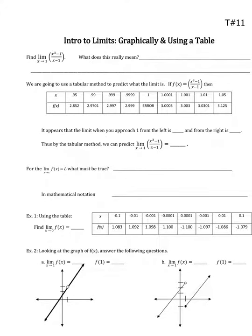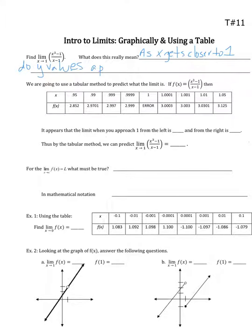Alright, here goes topic 11: intro to limits, doing it graphically and using a table. We have to first figure out what it really means when they're asking you to find a limit. In this particular expression, what you're asked is to see as the x values get closer to 1, are the y values reaching or approaching a particular value? So as x gets closer and closer to 1, do the y values of whatever this function is approach a particular value?